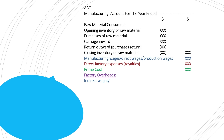Examples of factory overheads include indirect wages or factory wages — wages paid to workers who are not directly producing goods but are operating factory activities, such as cleaning staff and security guards of the factory. Sometimes direct factory wages are not given and we treat factory wages as direct wages, but normally factory wages are recorded under factory overheads, as manufacturing wages and factory wages are clearly and separately described in the question.